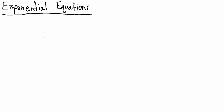Here's another example of solving exponential equations. So let's say we have 3 to the x minus 1 equals 2 to the x plus 5. This one's actually a bit more complicated than the previous examples because here we have a different base on both sides — base 3 and base 2 — and what's more complicated is we cannot express either of these bases nicely in terms of the other one.